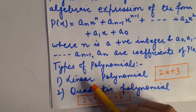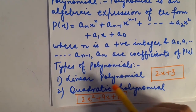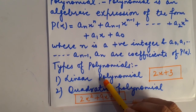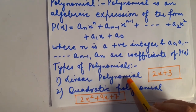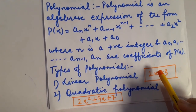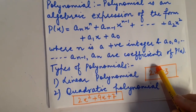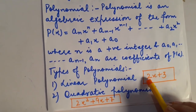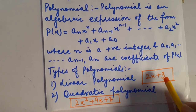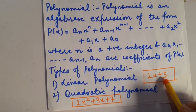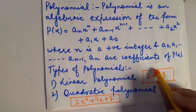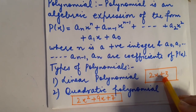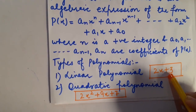Number 1: linear polynomial. Linear polynomial, as it is clear from the name itself, is that polynomial in which the power of the variable present in it is 1. For example, 2x plus 3 — this is a polynomial in variable x and the highest power of the variable present in it is 1. Such expressions are known as linear polynomials.